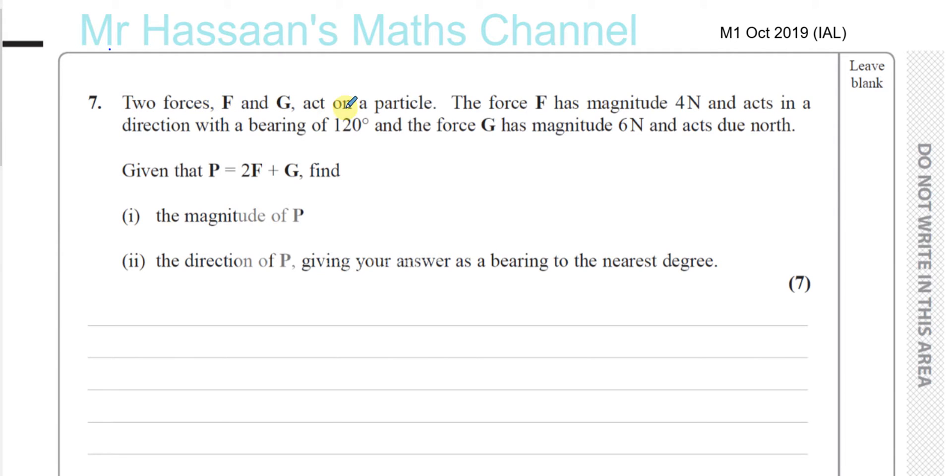Two forces, F and G, act on a particle. The force F has magnitude 4 Newtons and acts in a direction with a bearing of 120 degrees, and the force G has a magnitude of 6 Newtons and acts due north. Given that P is equal to 2F plus G, find the magnitude of P.